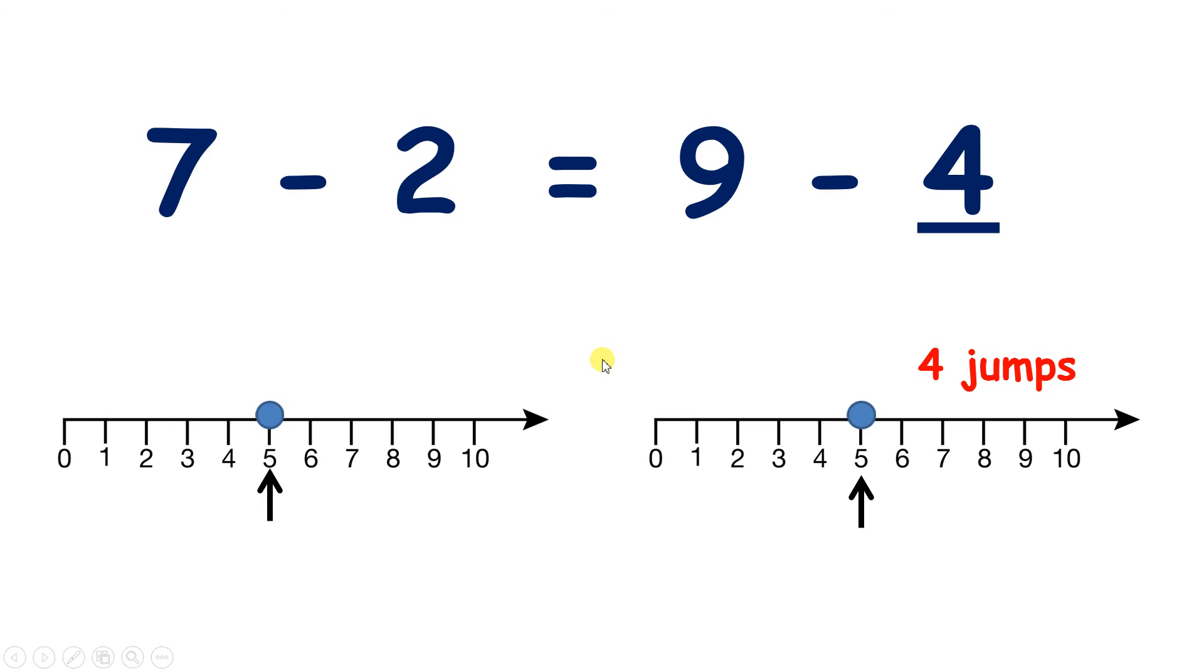Now someone might look at the screen here and say, so here you've got 5 on your number line, and here you've got 5 on your number line. So why did you write the number 4 in your missing number box? Why didn't you write 5? What would you say to that person to help them understand? So see if you can explain why writing 5 in the missing number box would be wrong.